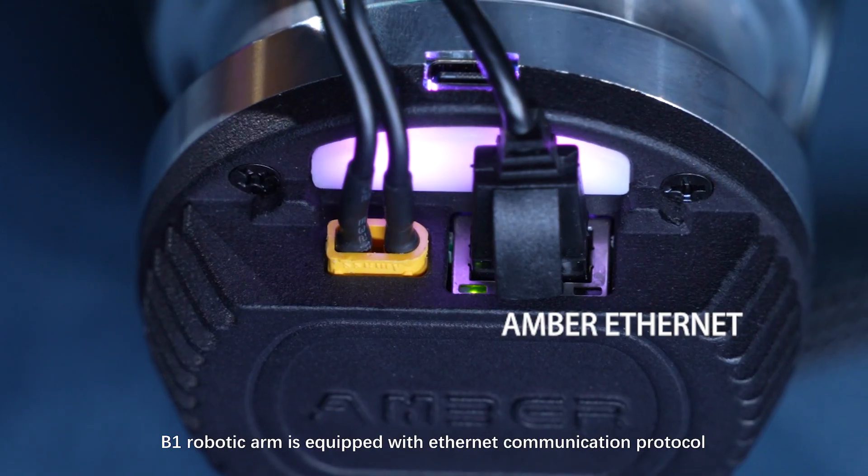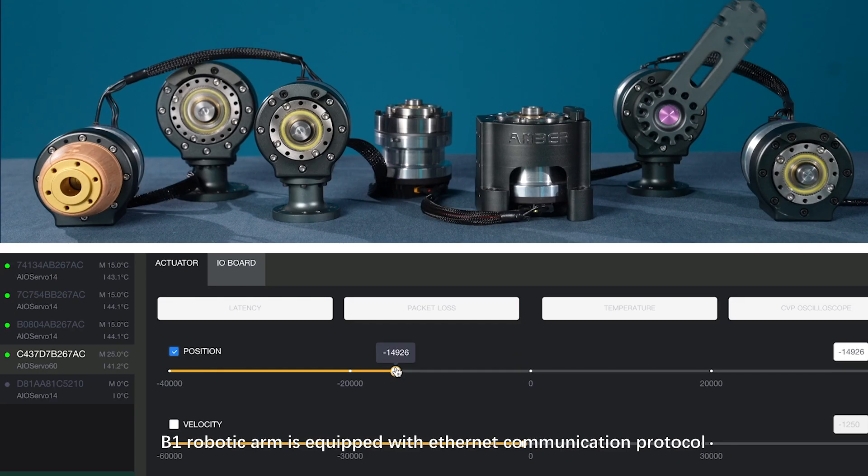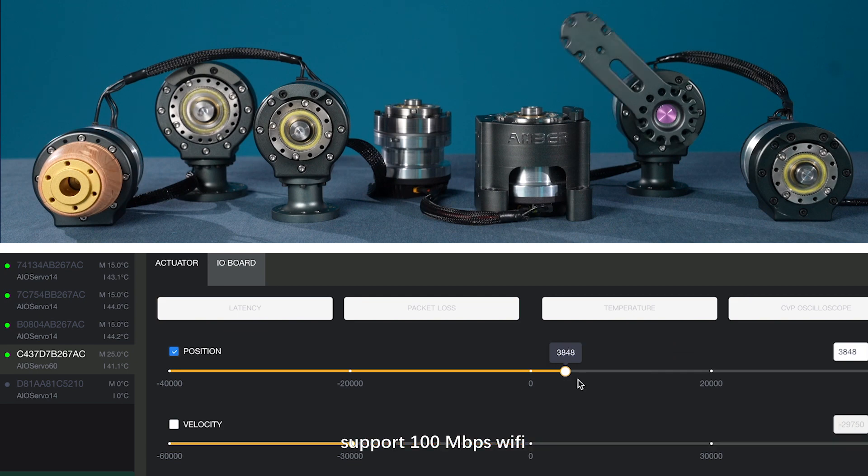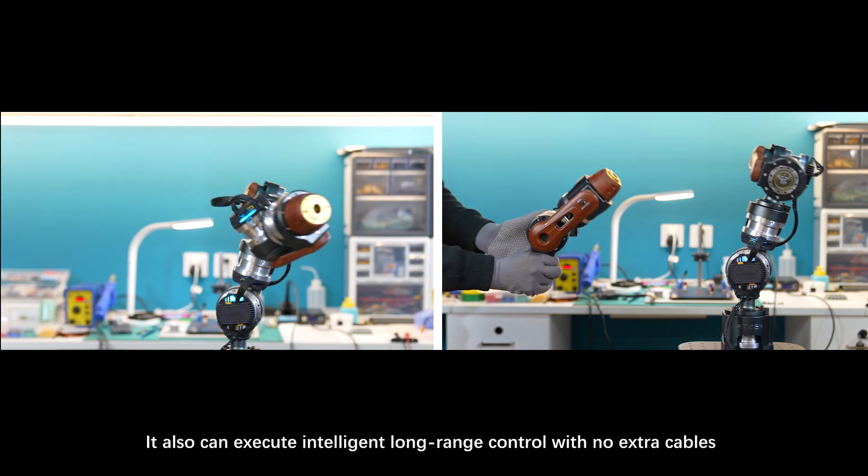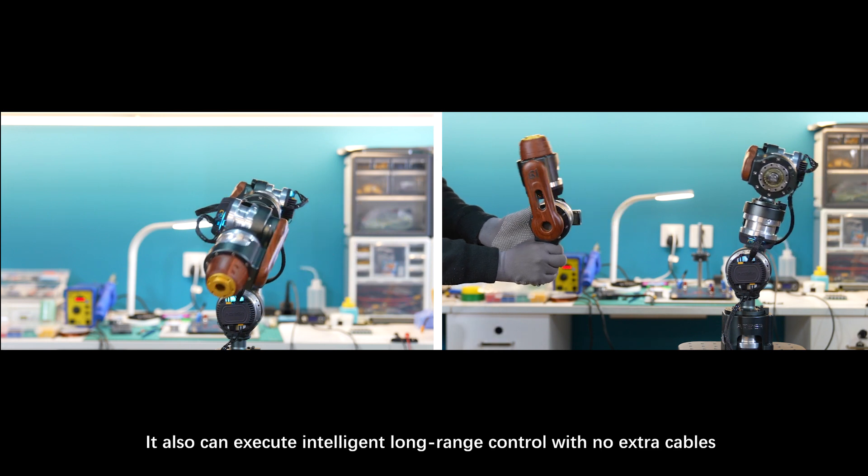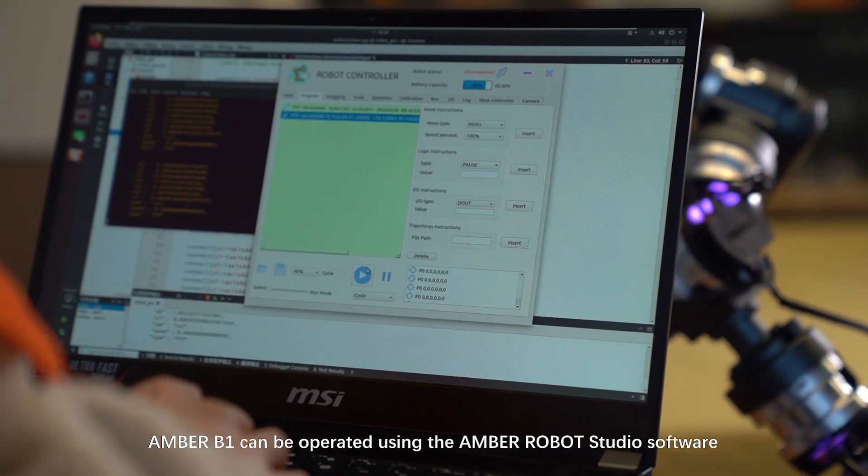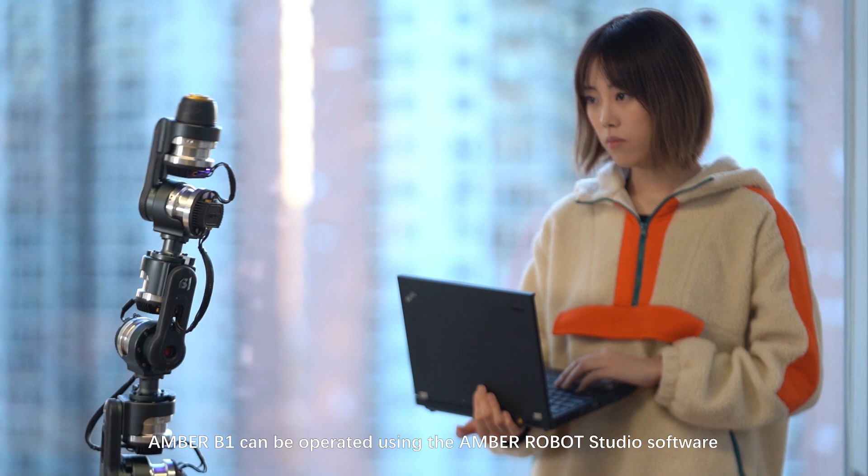B1 robotic arm is equipped with Ethernet communication protocol, support 100 Mbps Wi-Fi. It also can execute intelligent long-range control with no extra cables. Ember B1 can be operated using the Ember robot studio software.